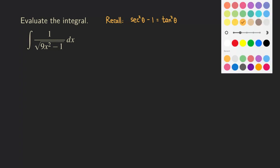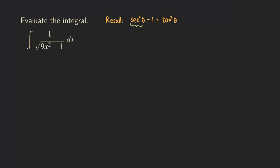We are going to claim that secant squared theta equals 9x squared. So in this case, when you square the secant you get 9x squared, which means secant theta is equal to 3x. If you square both sides: squaring secant gives secant squared, and squaring 3x gives 9x squared. So squaring both sides gives us that relationship.